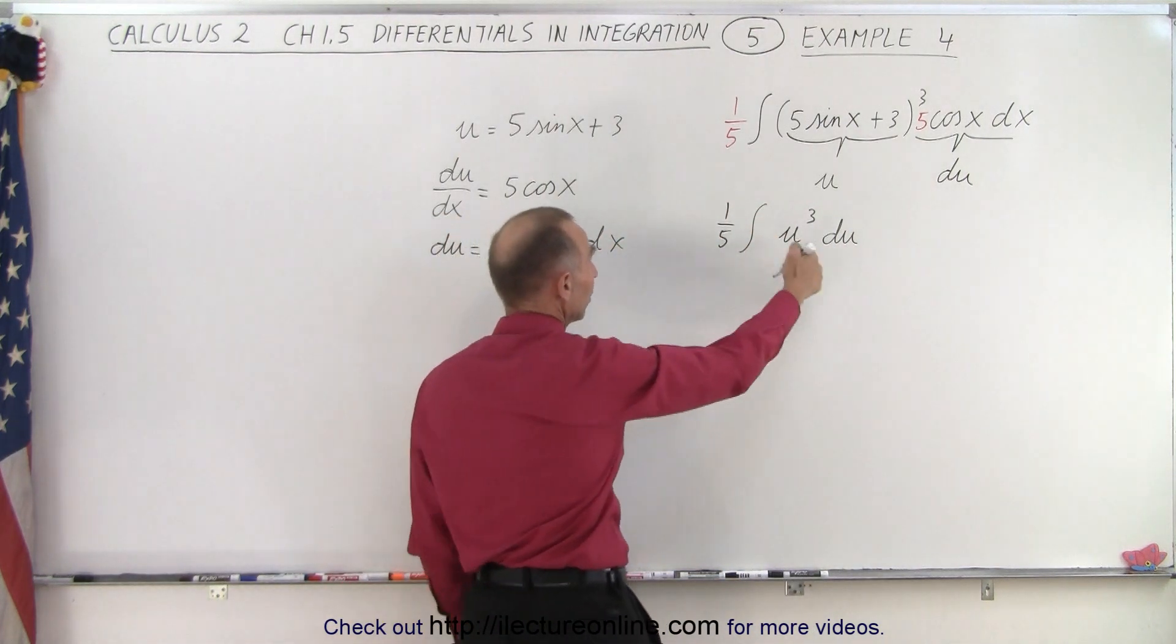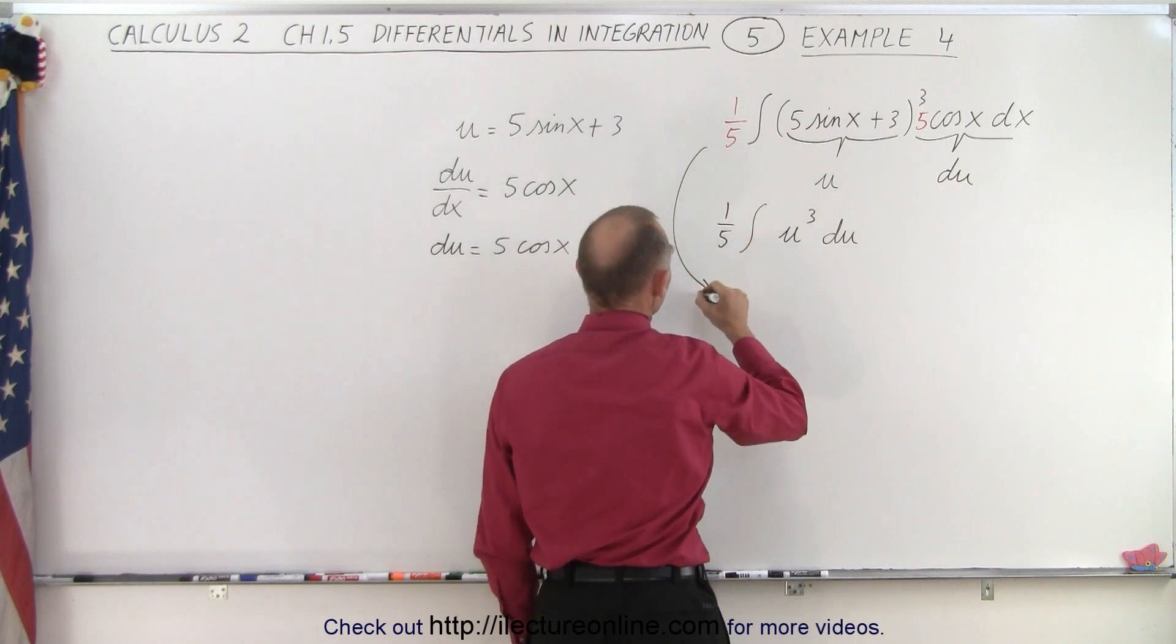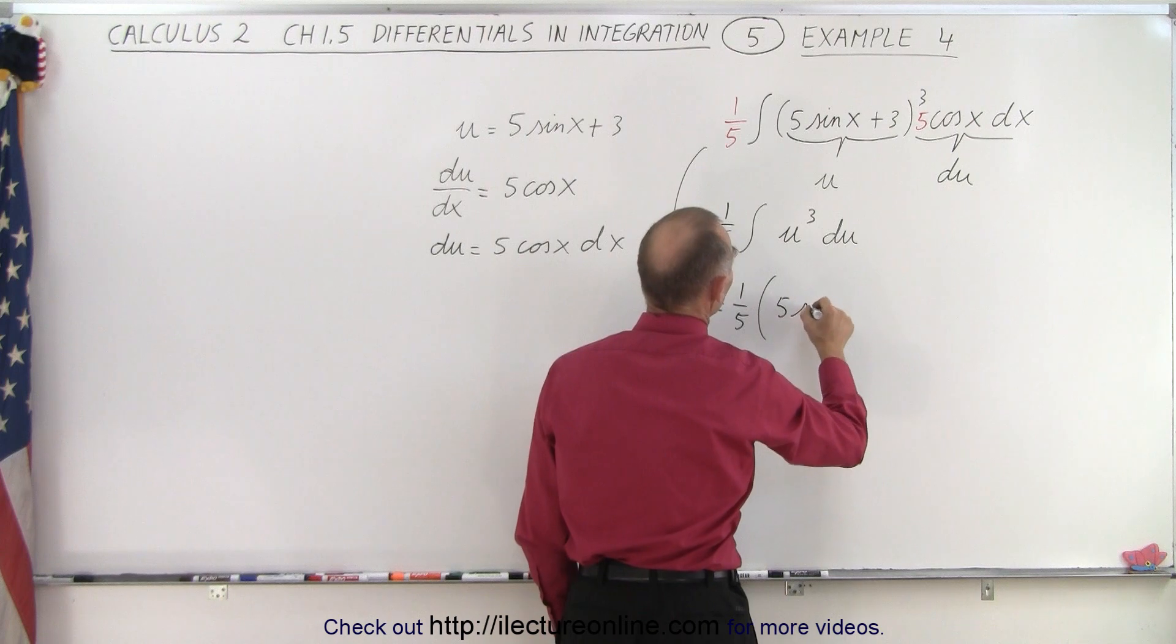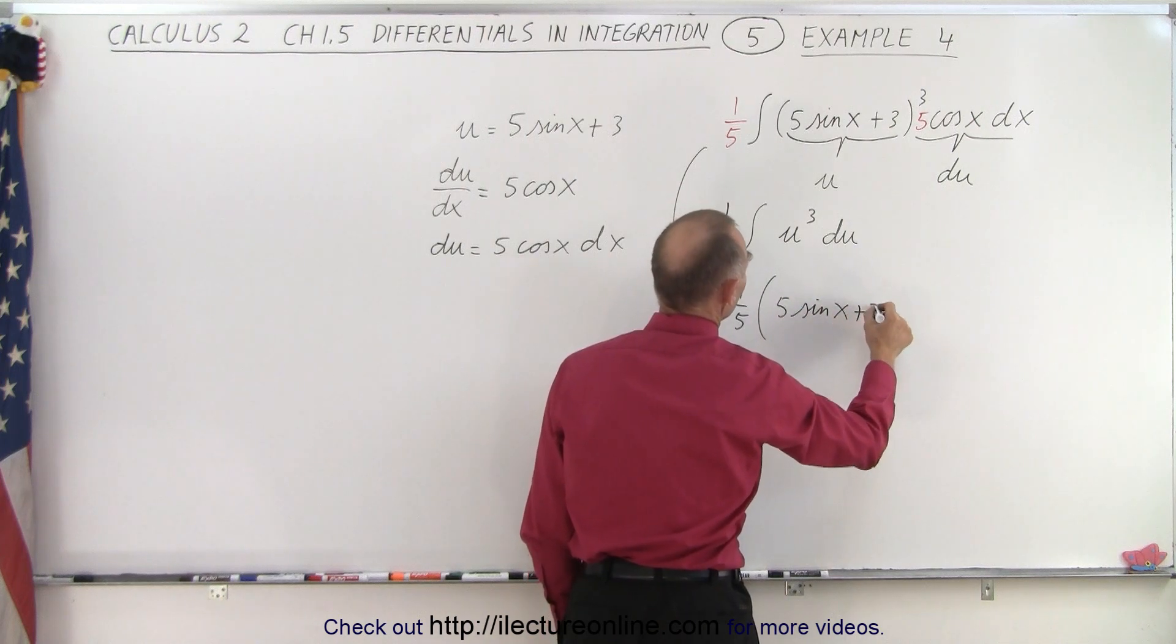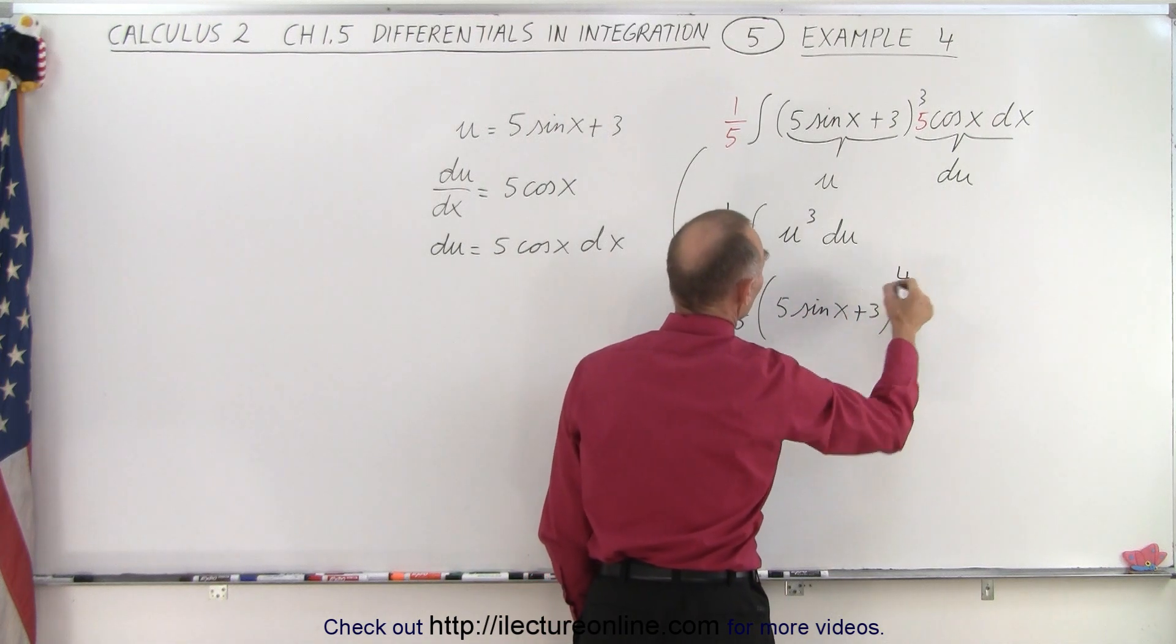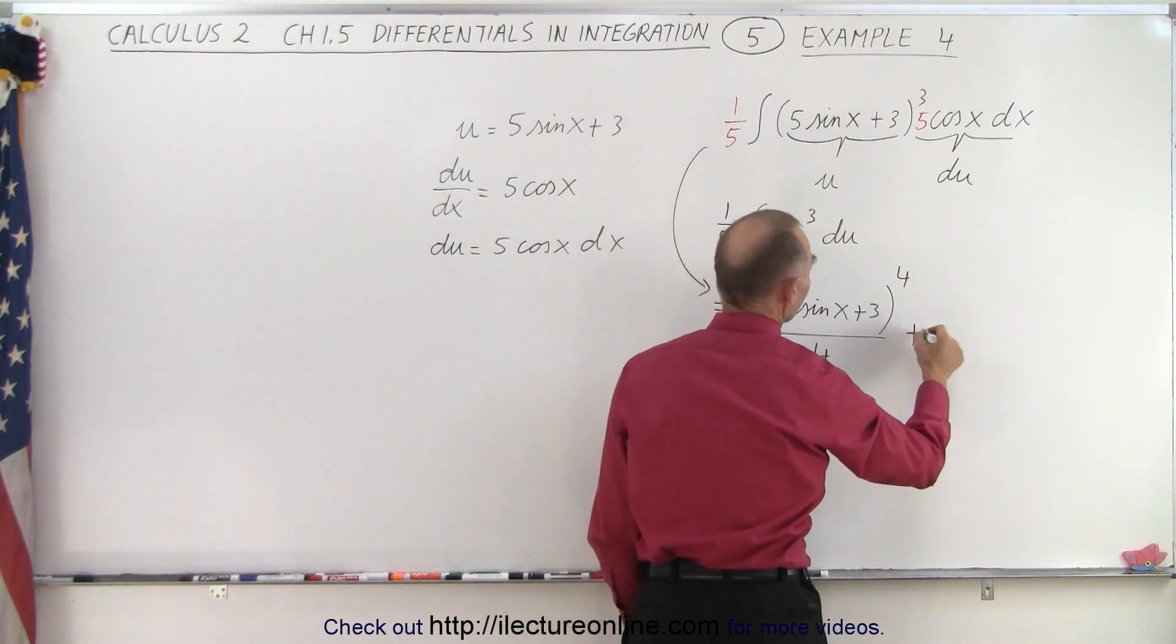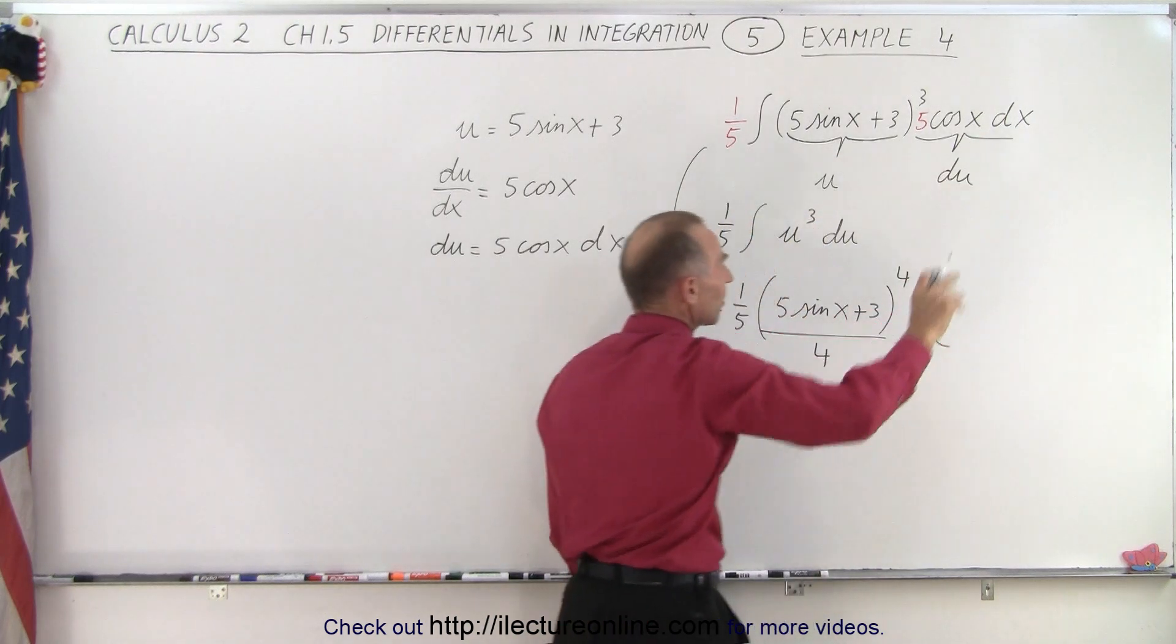Again, you don't have to do this, you can simply jump ahead and say that this is equal to 1 fifth times the quantity 5 times the sine of x plus 3 to the exponent 1 more divided by the new exponent plus a constant of integration. Of course, my du drops off.